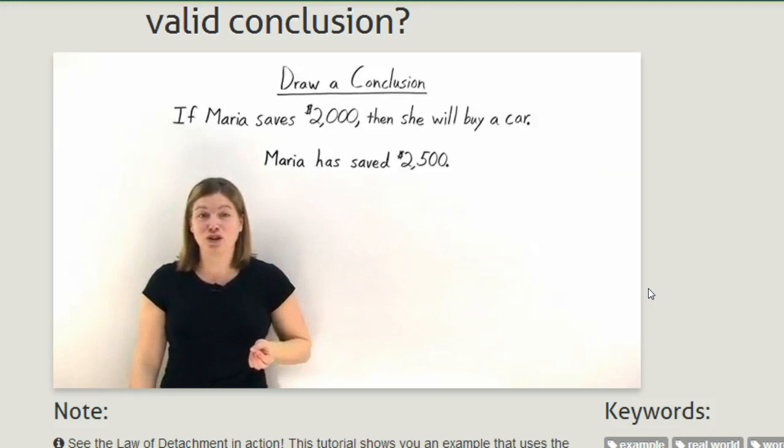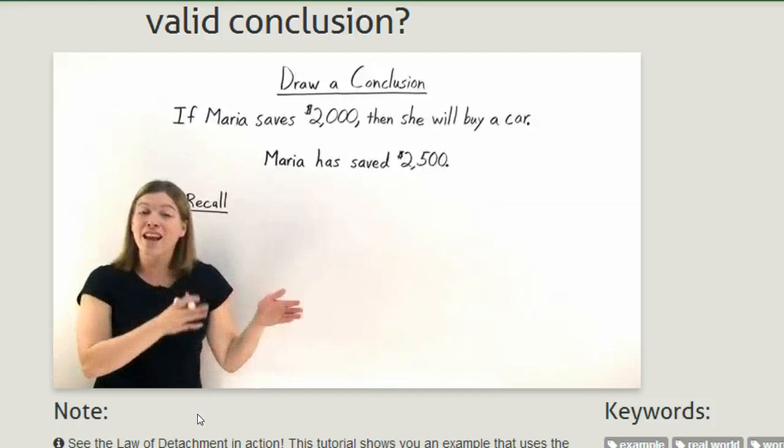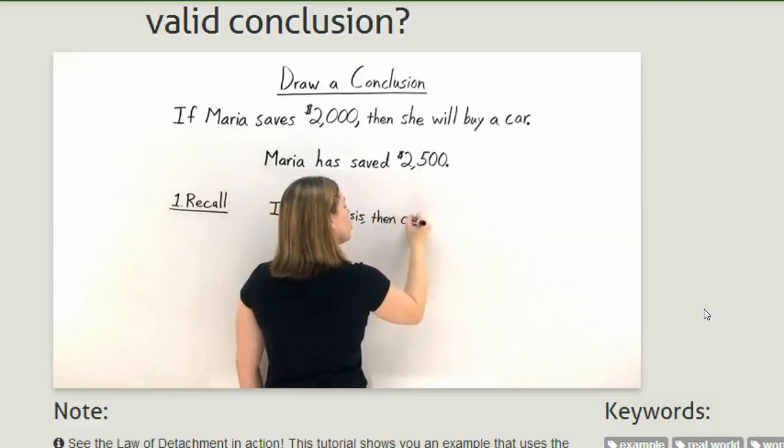Well it looks like we may be working with at least one conditional statement. So let's go ahead and first recall conditional statements. A conditional statement has a hypothesis and a conclusion. And usually they're written as if-then statements. So the conditional statement could look like this: If our hypothesis, then our conclusion.